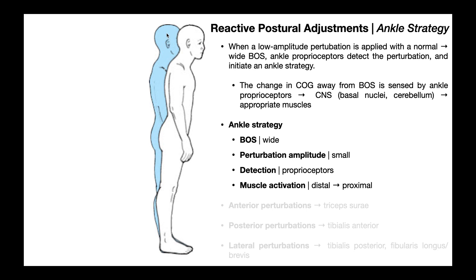In this picture, the blue image is the original position of the person — fully upright, center of gravity directly over the base of support — and the white image is after the perturbation. A perturbation clearly forced this person's center of gravity to shift anteriorly. In the blue image the ankle joint is in neutral at zero degrees, meaning that in the white image the ankle joint is actually slightly dorsiflexed. That change from neutral to dorsiflexion would be sensed by the proprioceptors in the ankle joint.